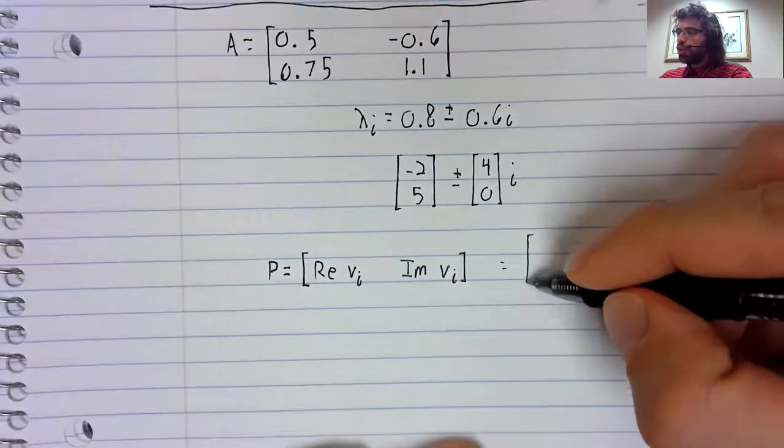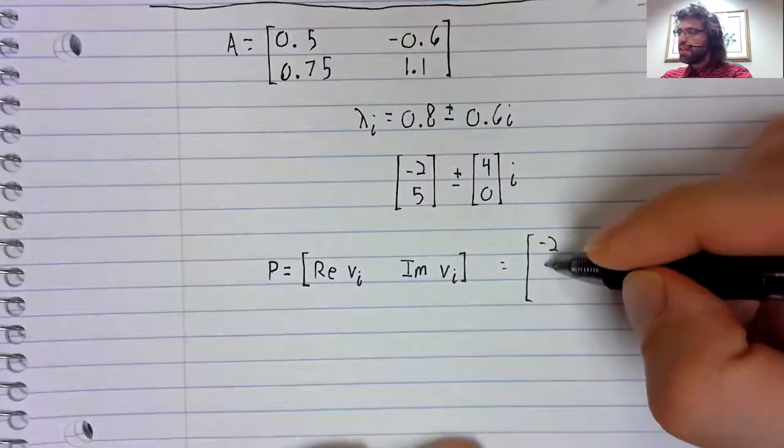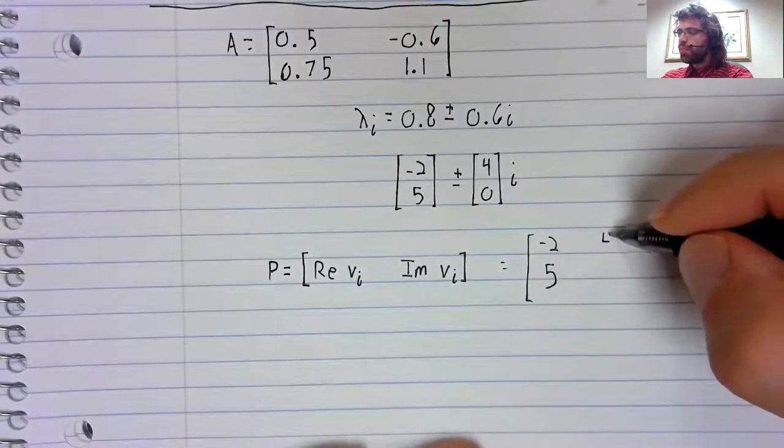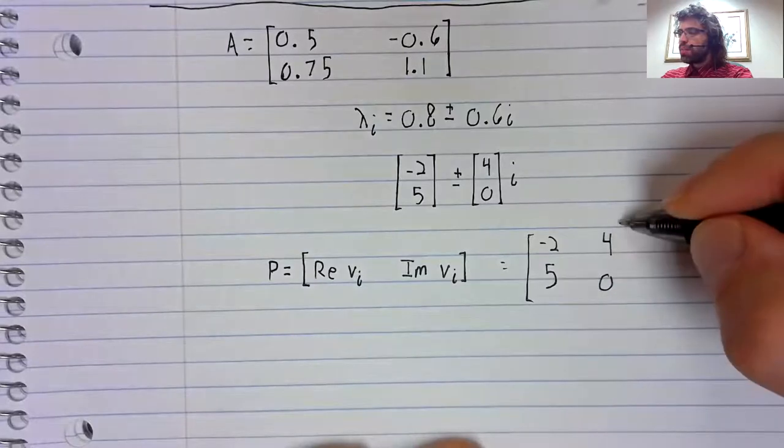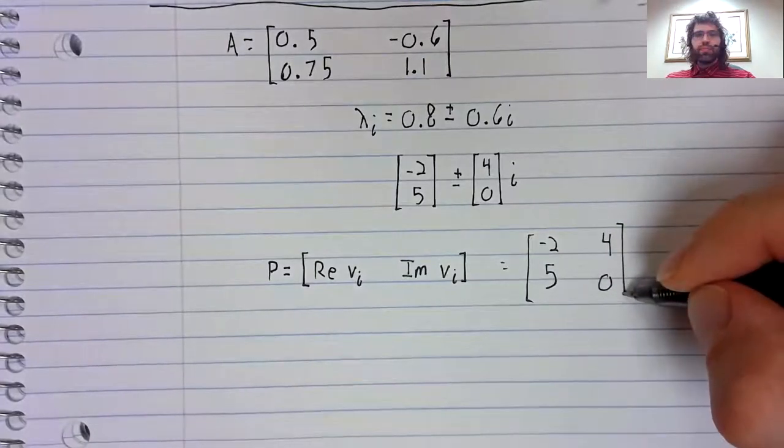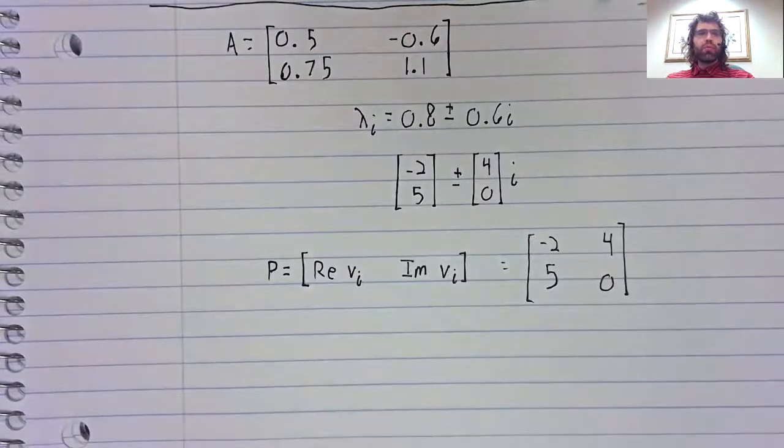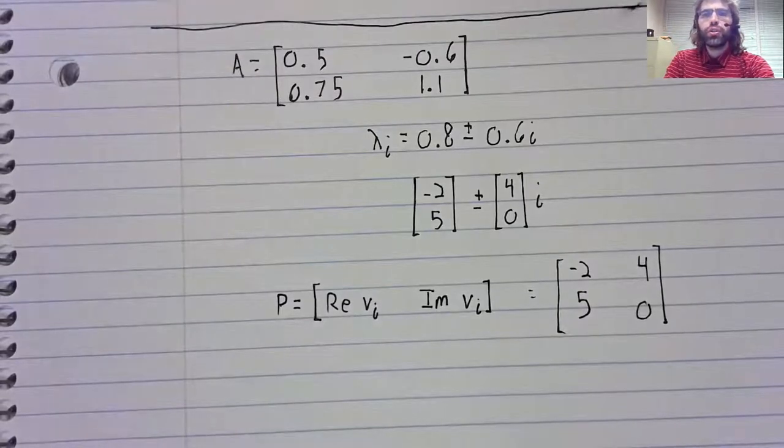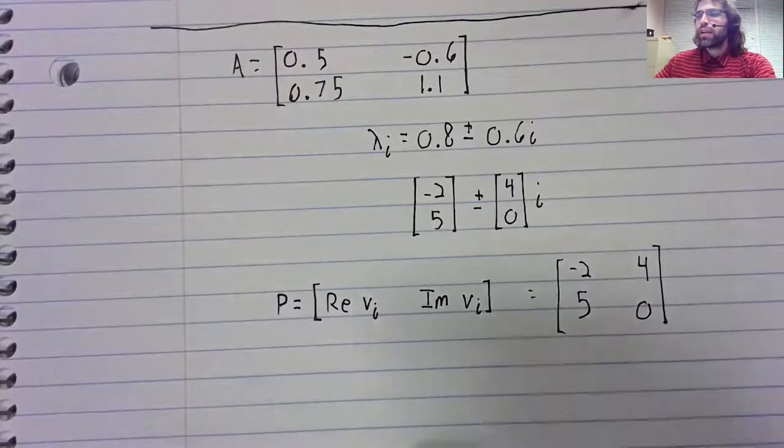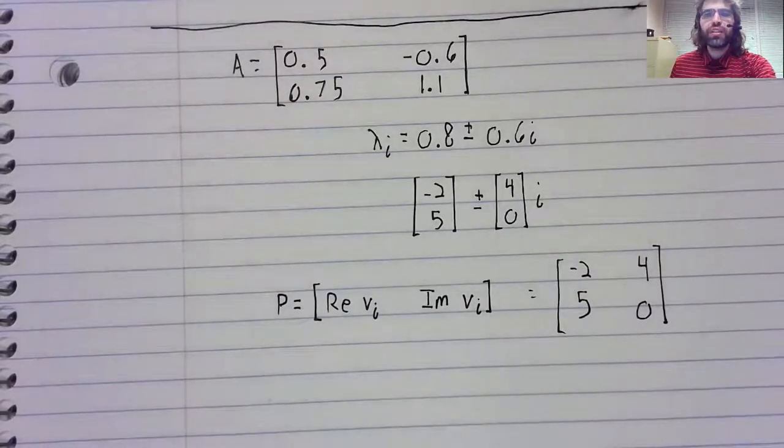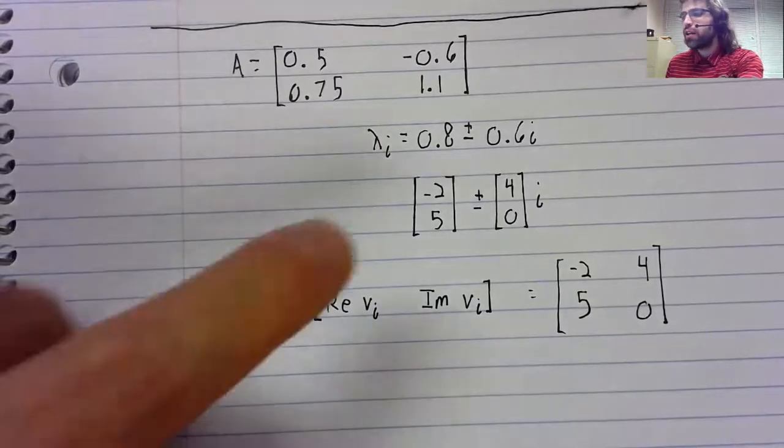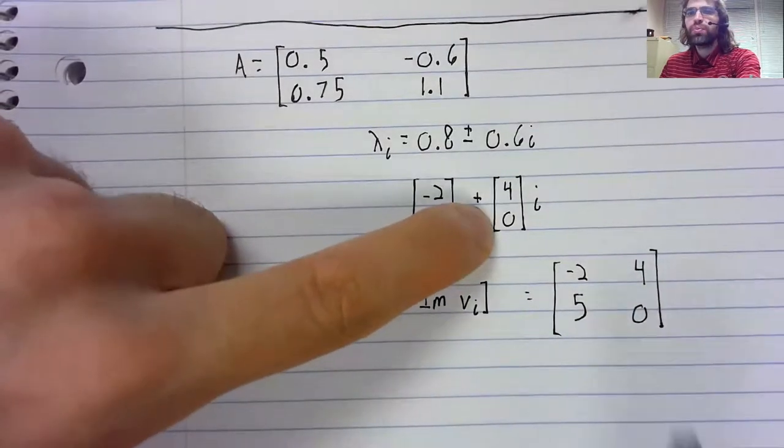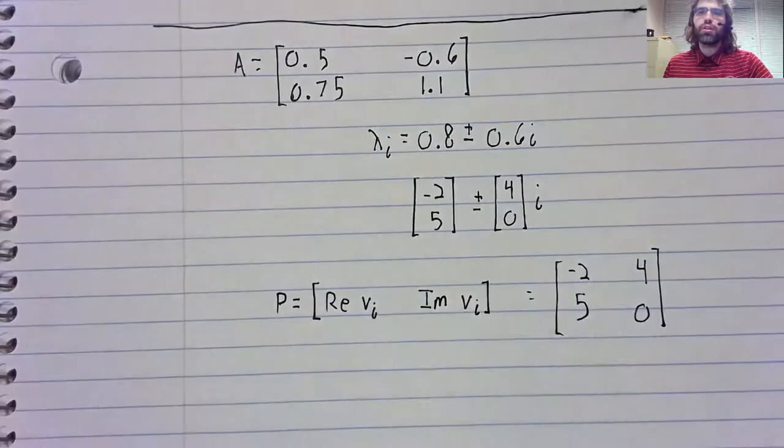Then the real part is negative two, five. And the imaginary part is positive four, zero. This is similar to the diagonalization you're used to, except instead of using two different eigenvectors to get the columns, one eigenvector is providing both the columns.